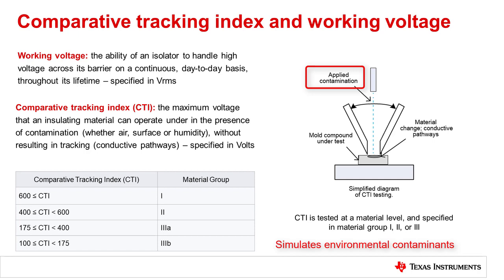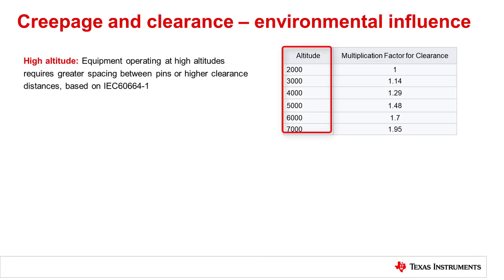Environmental conditions will also influence minimum creepage and clearance distances, with dependence on the end equipment use case, altitude, and environmental pollution degree. At higher altitudes of 2,000 to 5,000 meters above sea level, the air pressure is lower, causing peak overvoltages such as surge or temporary overvoltage to more readily cause arcing between isolator pins.